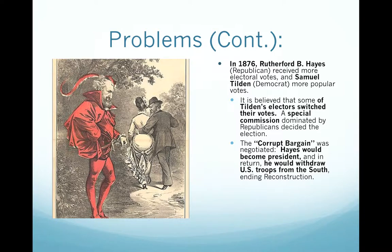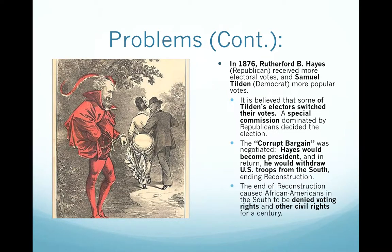At the time, most of the Southerners were Democrats and they wanted to go back to their policies of mistreating African Americans, and withdrawing the troops permitted this to happen. So when Reconstruction ended, African Americans were denied their civil rights, including voting, for the next century.